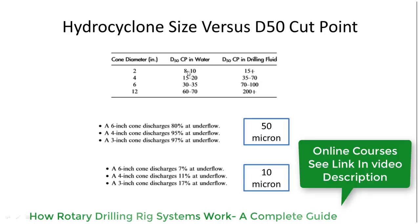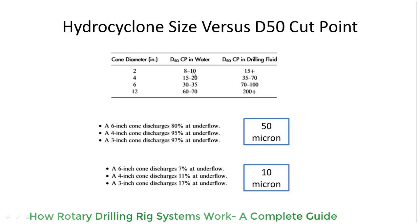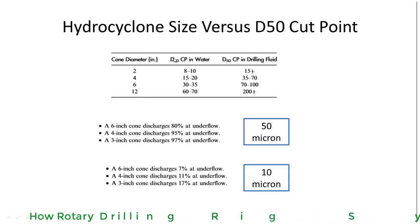With water, the D50 cut point will be 8 to 10 microns with a 2 inch cone diameter. With a 4 inch cone diameter it will be 15 to 20, with a 6 inch it will be 30 to 35, and for a 12 inch hydrocyclone cone diameter the D50 cut point for water will be 60 to 70 microns.